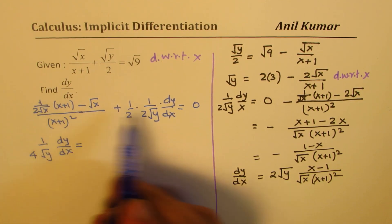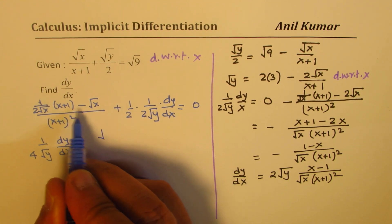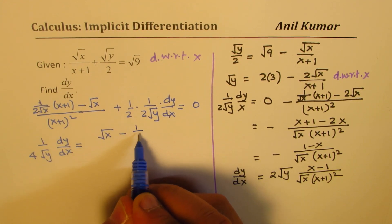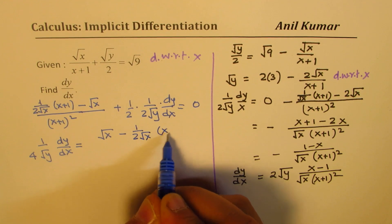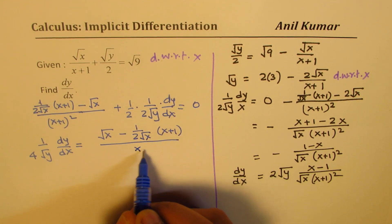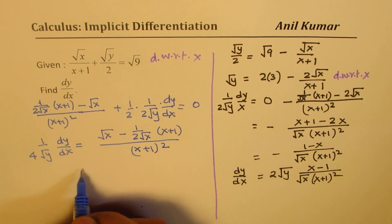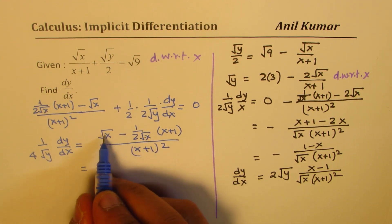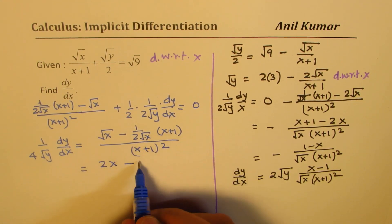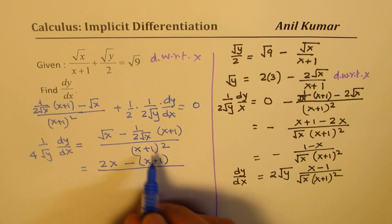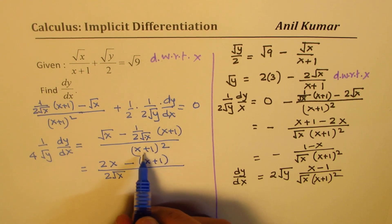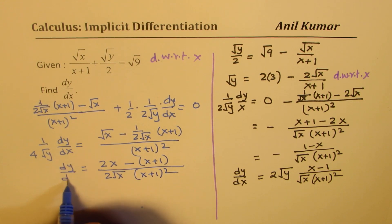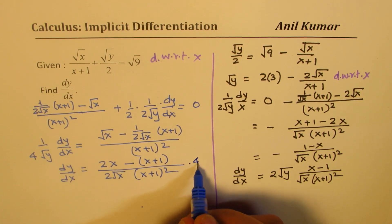Taking it to the right side, we write square root of x first: that is negative of this — square root of x minus half of square root x times (x plus 1) over (x plus 1) squared. Taking 2 square root x as common, we get 2 square root x times square root x — which is x — minus (x plus 1), in the denominator 2 square root x and (x plus 1) squared. Then dy/dx — multiply by 4 square root y.